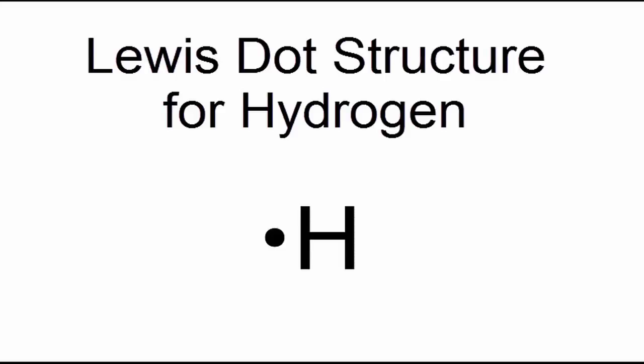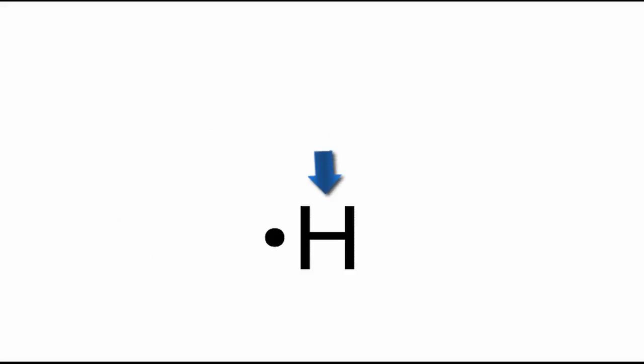Hydrogen only has one valence electron, so we'll take and put that valence electron right next to the element symbol H for hydrogen.